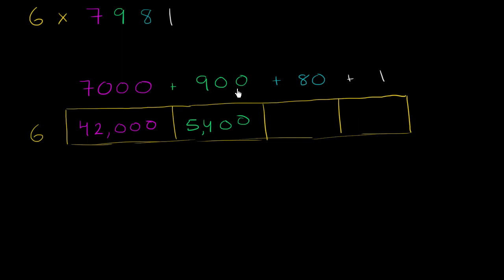6 times 80, well, 80 is 8 tens. So 6 times 8 is 48. But since it's 6 times 80, or 8 tens, this is going to be 48 tens, or 480. And then finally, 6 times 1, of course, is equal to 6.